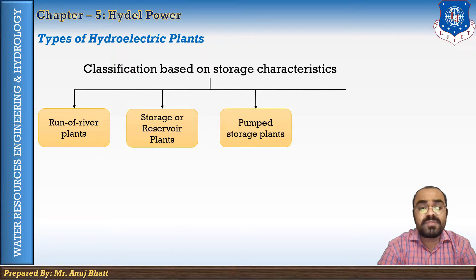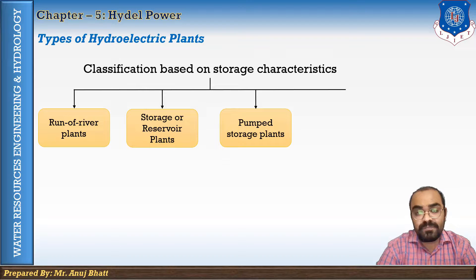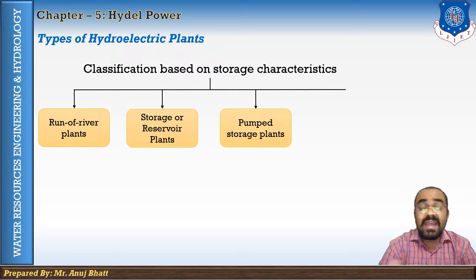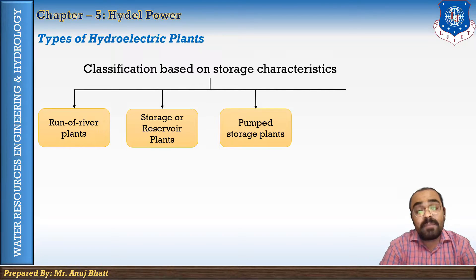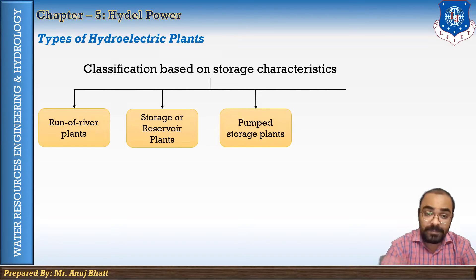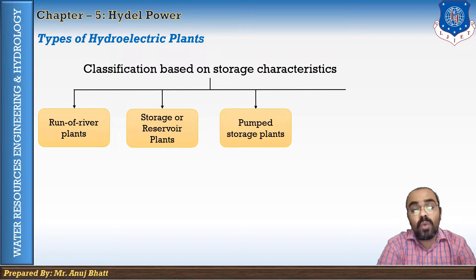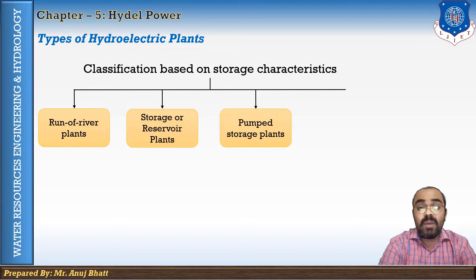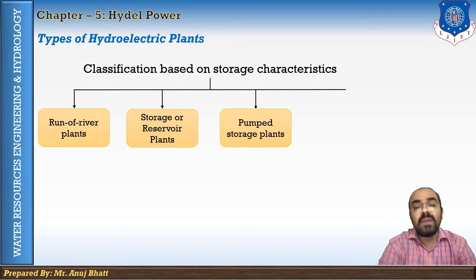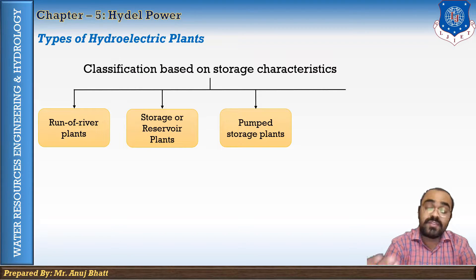The pump storage plant generates power only during the peak load period, while during the off-peak period water is pumped back to the headwater pool. The pumps are usually run with secondary power available from other plants in the system. It is usually not necessary to install a separate pumping system for heads up to 120 meters, as the turbine runners can be used both as a turbine and as a pump.